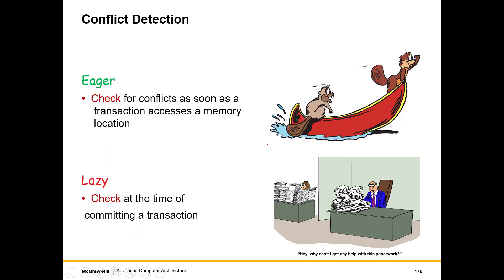For conflict detection, we can also be eager or lazy. In eager conflict detection, we check for conflicts as soon as a transaction accesses a memory location — this increases overhead substantially since every single access must be burdened with conflict checking. In the lazy approach, checking is done at the time of committing a transaction.